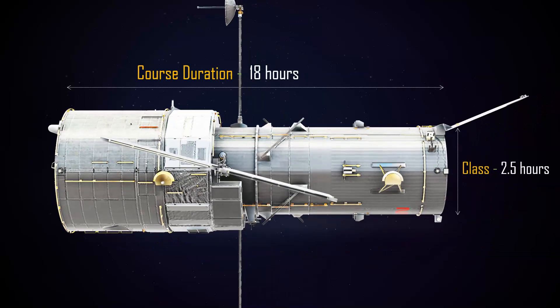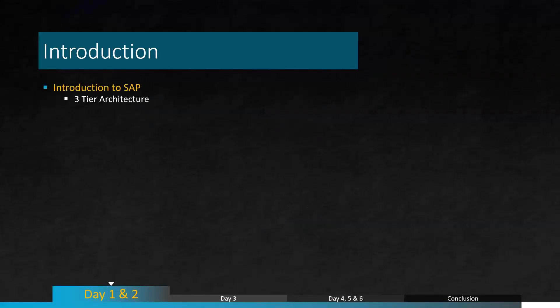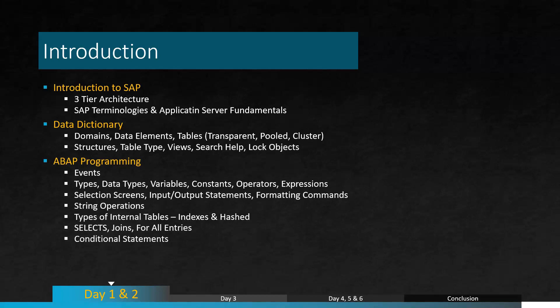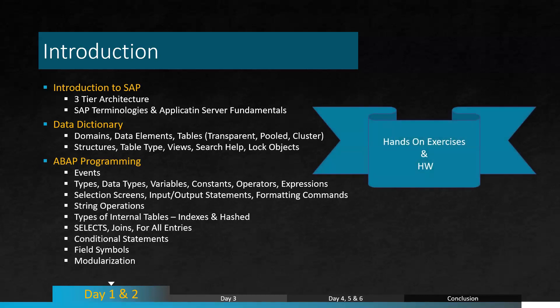The total length of the course would be approximately 18 hours, and each class will be around 2 hours 30 minutes. Let us check the day-wise breakup. On the first two days, we will introduce the participants to the SAP architecture and jargons. We will learn about data dictionary and then dive deep into ABAP programming elements and old ABAP syntax. It will be hands-on sessions and participants will also be given opportunity to practice during the class and they will also get homework assignments.